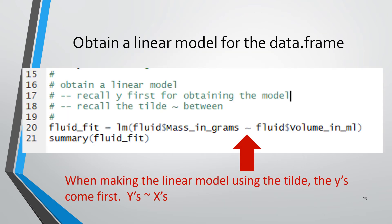Next, we are going to do a fit, a regression, a trend line, a linear model. So R uses the linear model notation and its method for doing so is titled LM. So we're doing LM and then we want the y's, then a tilde, then the x's. So our y's were mass in grams. So it's fluid dollar sign mass in grams, tilde fluid dollar sign volume in meters. So again, when we're doing the linear model, we use the tilde notation and the y's come first in the tilde notation. In the second line, in 21, we're doing a summary of the linear model, the result of the linear model.